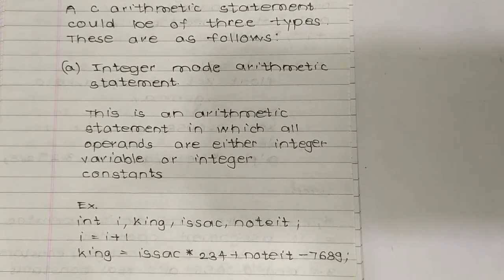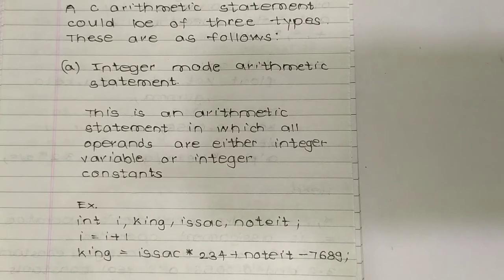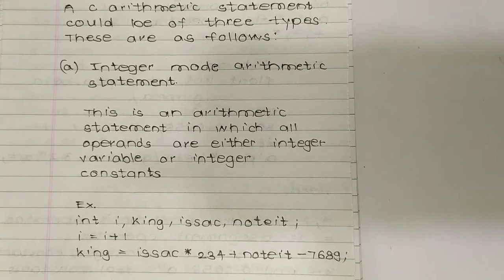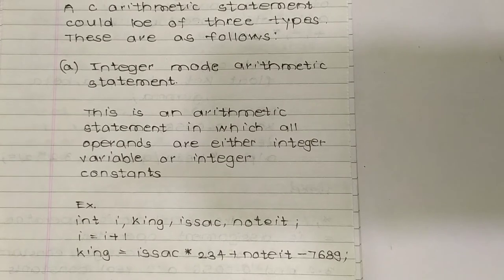A C arithmetic statement could be of three types. Type A is the integer mode arithmetic statement. This is an arithmetic statement in which all operands are either integer variables or integer constants. For example: int i, k, n; and i = i + 1, k = n * 23 + n - 768, and so on — all operands are either integer variables or integer constants.